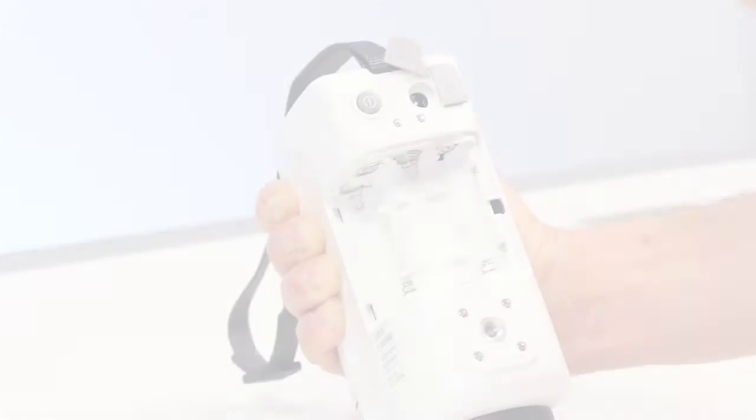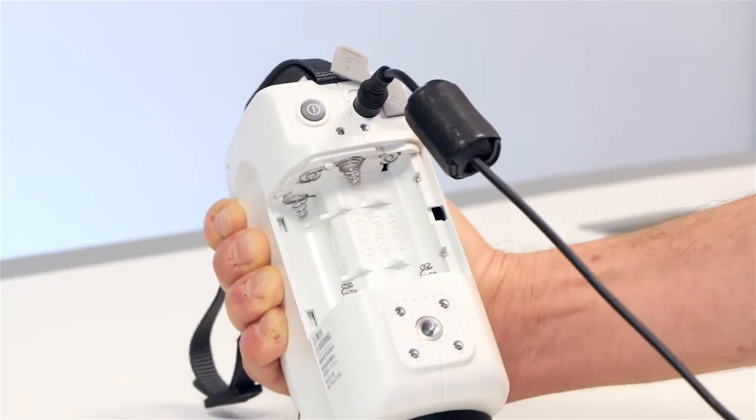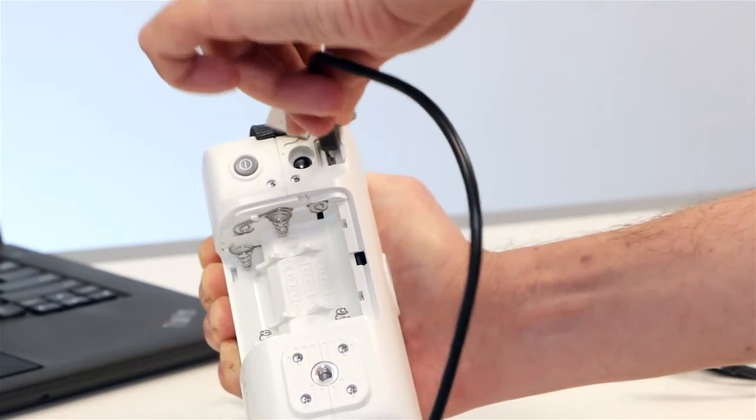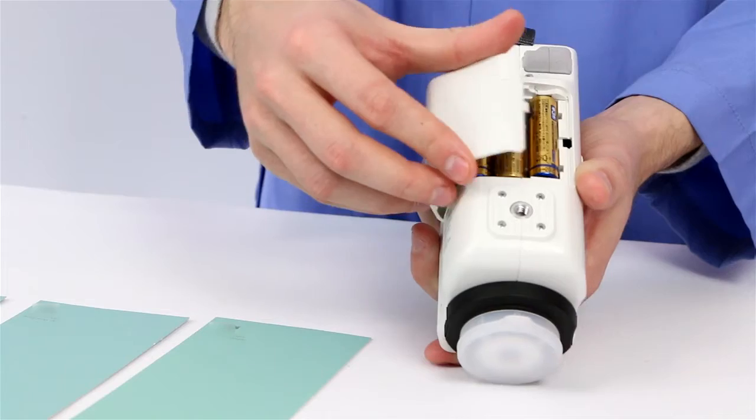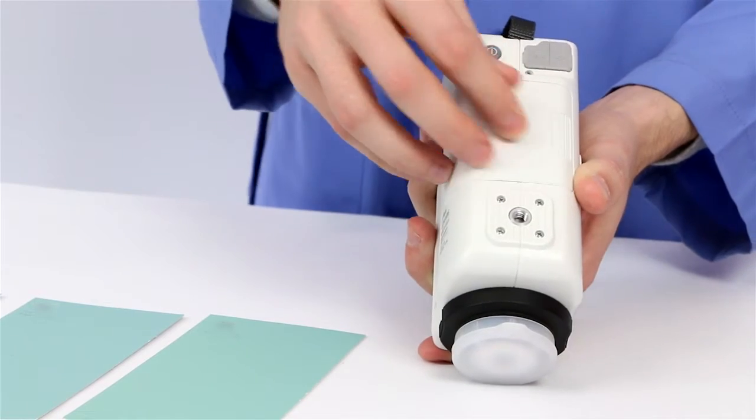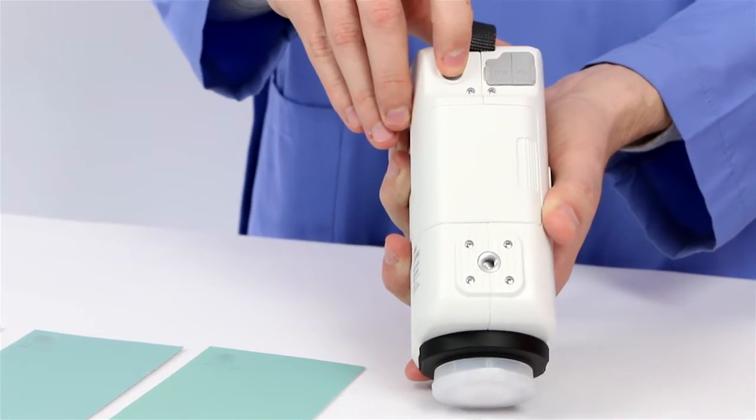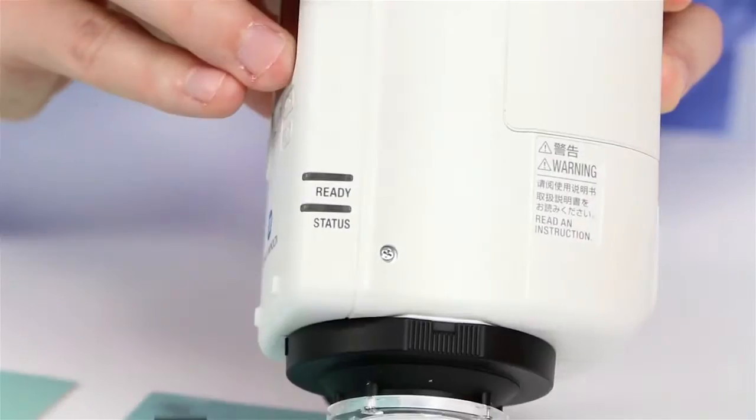You can operate the CR10 Plus with any one of three power sources including an AC adapter, USB cable or batteries. Ergonomic and lightweight design allows you to measure color difference with ease.